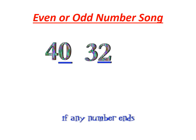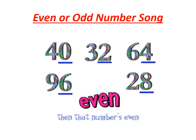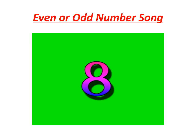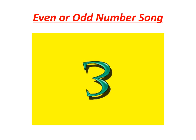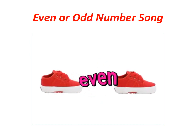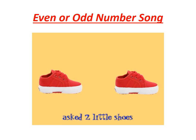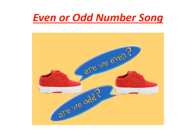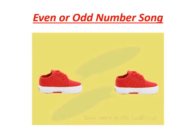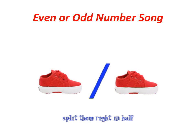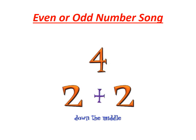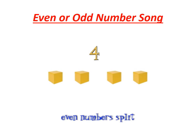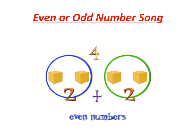Say this rhyme: if any number ends with one of those digits — 0, 2, 4, 6, 8 — then that number's even every time. Are we even or are we odd? As two little shoes — are we even or are we odd? They will quite confuse you. Can you split them equally when you have just two? Yes, you can split them right in half, one left and one right shoe. Even numbers — split them up, even split, down the middle. Even numbers split right down the middle. Doubles are the even numbers every time.